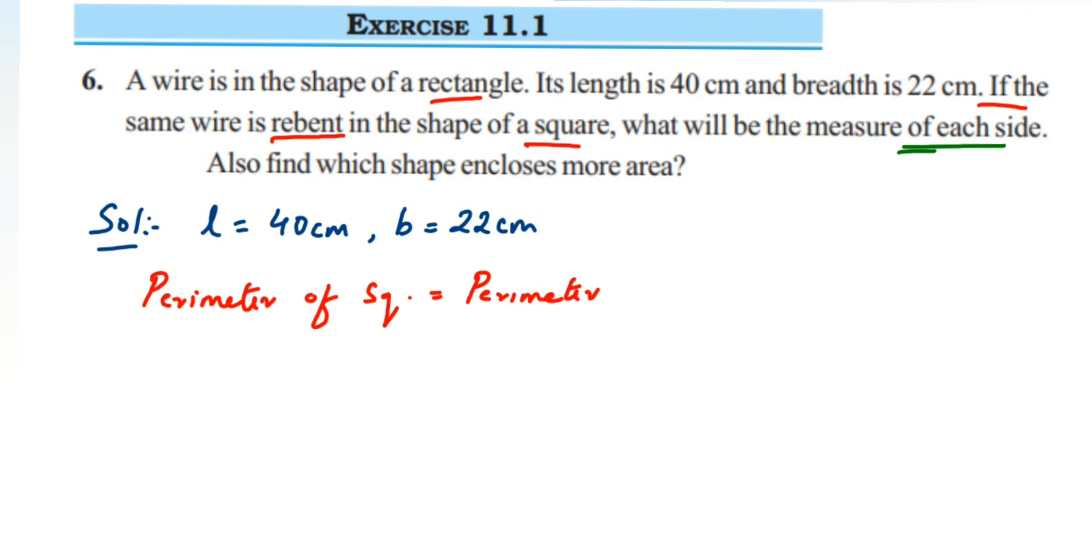We will write down the formula. Perimeter of square is 4 times side, so 4 × side. We have to find out side here. This is equal to perimeter of rectangle which is 2 × (length + breadth).